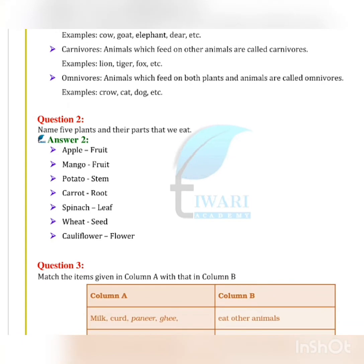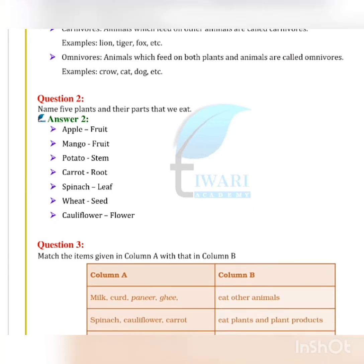Animals which feed on other animals are called carnivores — like lion, tiger, fox, etc. Omnivores are animals which feed on both plants and animals. Examples of omnivores include crow, cat, dog, etc.